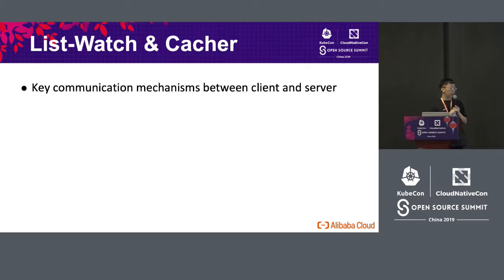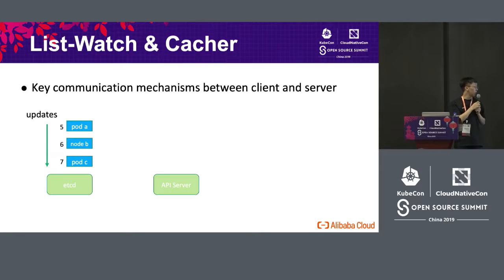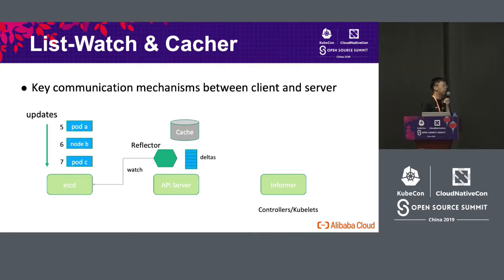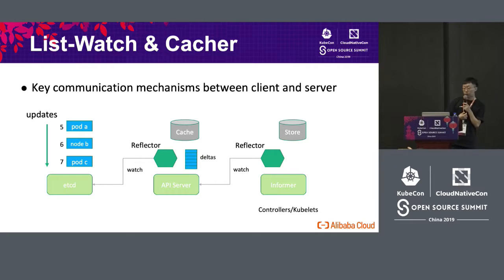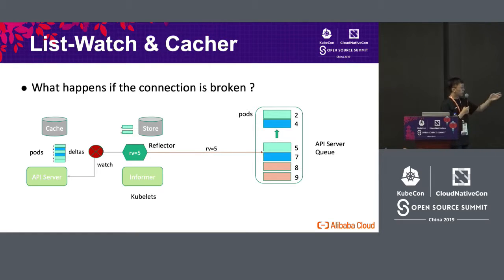The load balancing problem can be solved by this method. But in the API server, there is another problem. If you did Kubernetes development before, you can see that the key communication mechanism between a client and a server is list, list-watch and cacher. All of the typical objects will update one list, and the API server will have a reflector to watch the data on ETCD. All codes can be reused afterwards. However, in this mechanism, if the watch is broken or disconnected — maybe the network is broken — you have to retry.